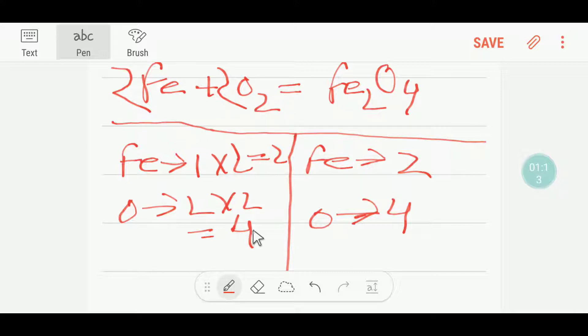Now we have four oxygen, four oxygen, two iron, two iron. So this equation is balanced.